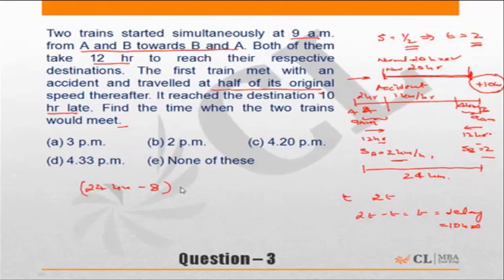So after the accident, the distance to be covered is 16 kilometers. At what time did the accident take place? It took place 2 hours after 9 a.m. So that means the accident took place at 11 a.m.